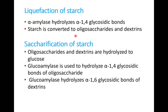In the liquefaction, enzymes called alpha amylase are used to hydrolyze the alpha-1,4 glycosidic bond in the starch. During this liquefaction process, the starch is converted to oligosaccharides and dextrin. Oligosaccharides are a kind of sugar composed of 3 to 10 units of simple sugars like glucose.